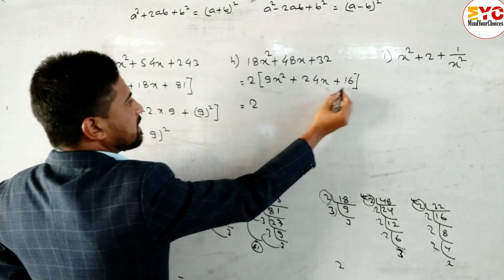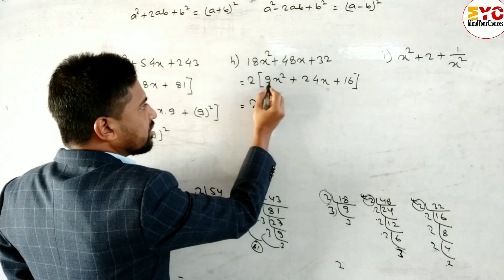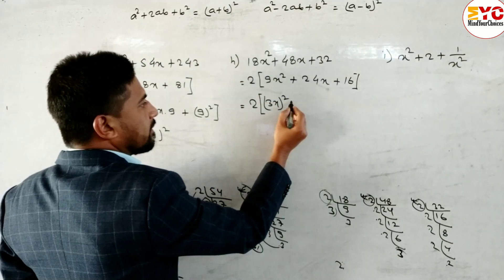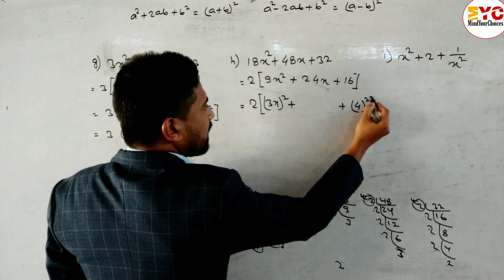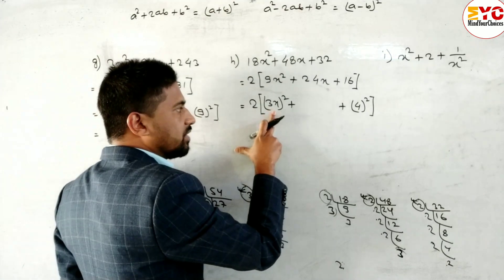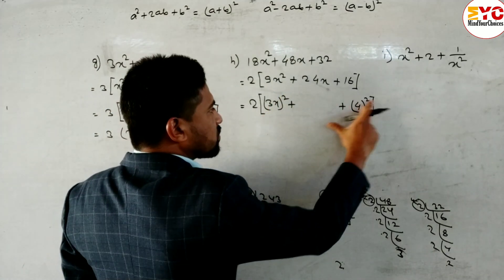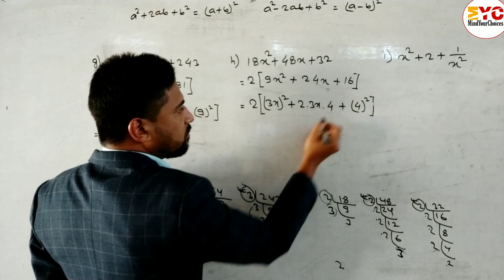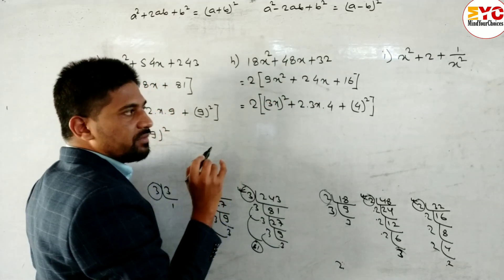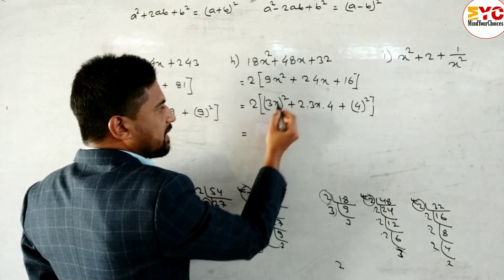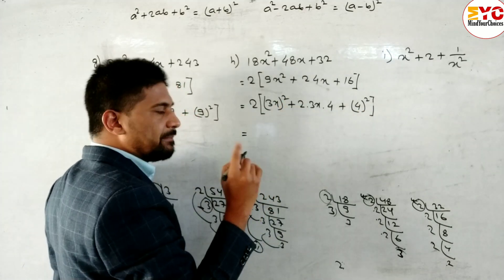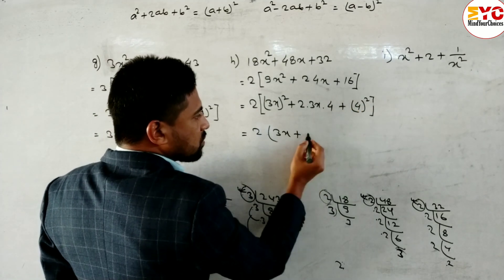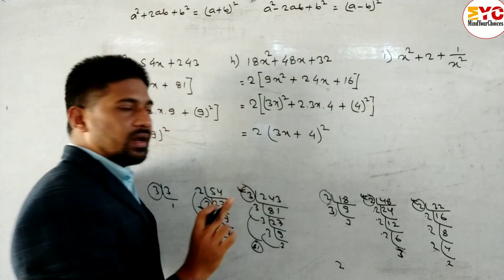Now convert 2(9x² + 24x + 16): first term 9x² = (3x)², last term 16 = (4)². In place of a we have 3x, in place of b we have 4. Middle term 2ab = 2·3x·4 = 24x — this matches. This is in the form a² + 2ab + b², so the formula gives (3x + 4)². The full answer is 2(3x + 4)².